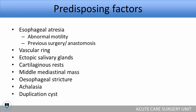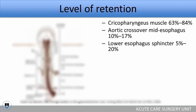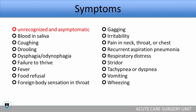Where do the majority of foreign bodies get stuck? 63% to 83% at the cricopharyngeal muscle, which is the narrowest part, then at the aortic crossover mid-esophagus about 10% to 17%, and at the lower esophageal sphincter 5% to 20%. Symptoms kids present with range from completely asymptomatic to quite severe symptoms, especially respiratory: coughing, drooling, dysphagia, going all the way to respiratory distress, stridor, tachypnea, dyspnea, vomiting, and wheezing. The big risk factor, of course, is aspiration.